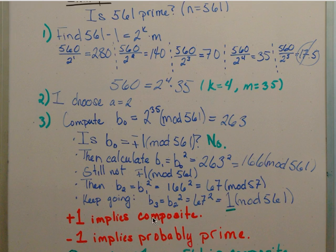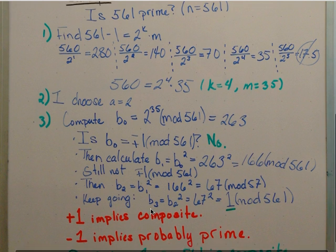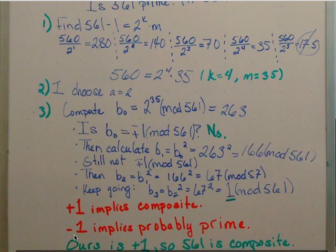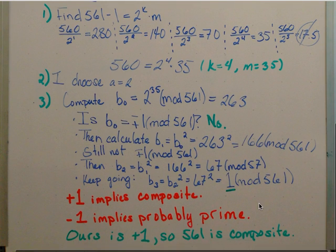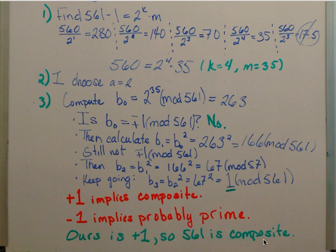Now at this point, we know that we have a positive 1 mod 561. The positive 1 implies composite, where negative 1, if we had gotten a negative 1, it would have implied prime. Therefore, ours is positive 1, so 561, our n, is composite.